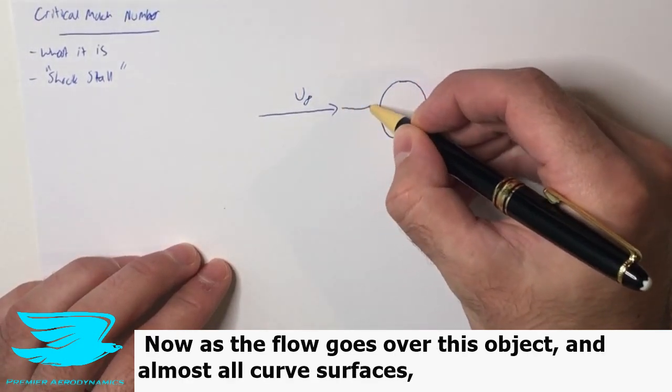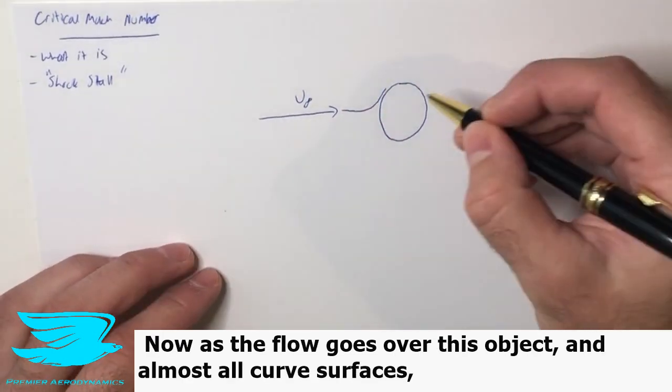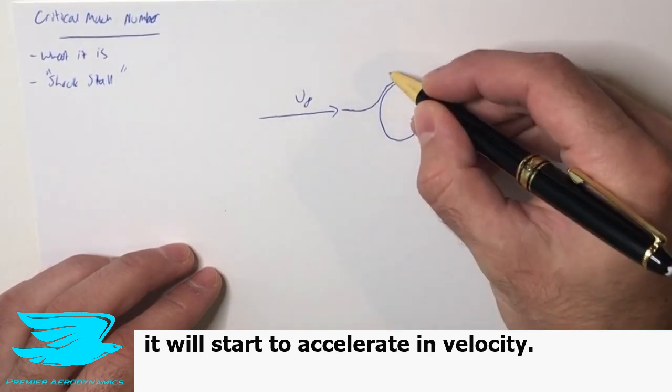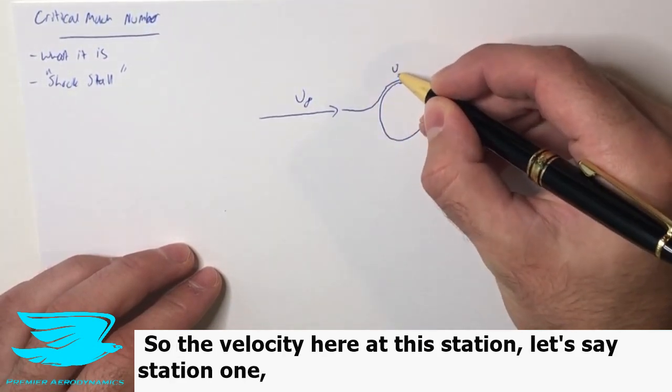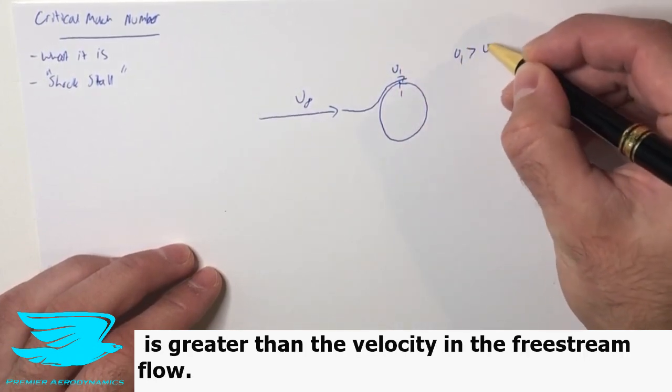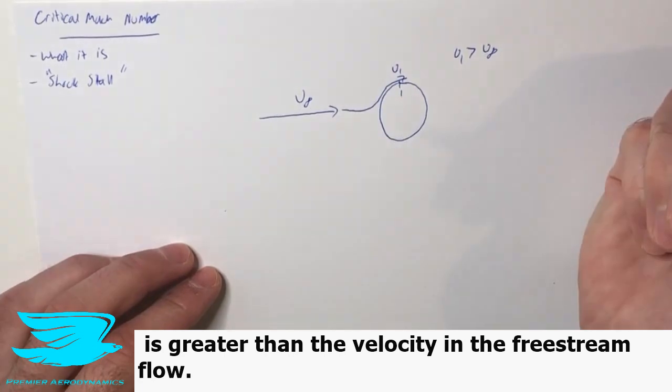Now as the flow goes over this object and almost all curved surfaces, it will start to accelerate in velocity. So the velocity here at this station, let's say station one, is greater than the velocity in the free stream flow.